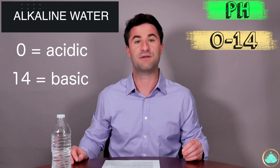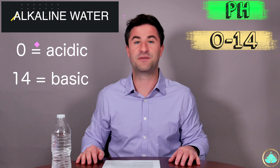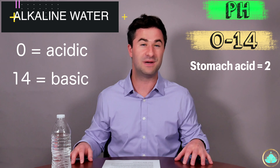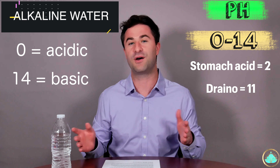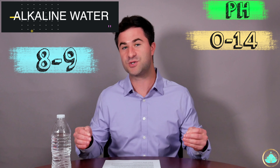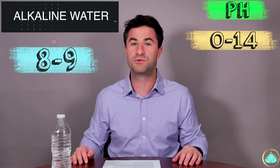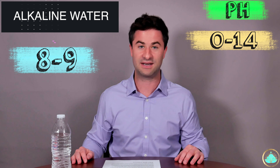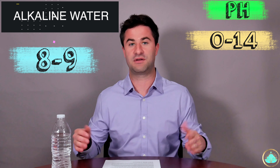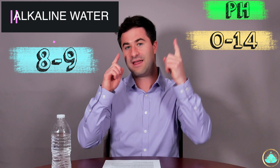Today we will be drinking in all there is to know about alkaline or ionized water. Alkaline refers to the pH value, or how acidic or basic a certain substance is. pH is measured on a scale between 0 and 14, with 0 being very acidic and 14 being very basic. The pH of stomach acid is around 2 and the pH of Drano is around 10 or 11. Alkaline water has a pH between 8 and 9, which is higher than your average drinking water, which has a pH of around 7. The main claim is that alkaline water can reduce or neutralize all of the acidic buildup within our bodies, which can allow you to live a much healthier life.